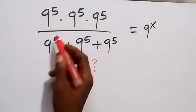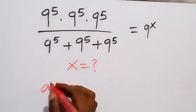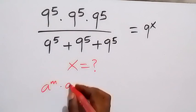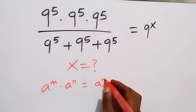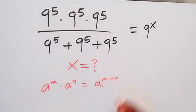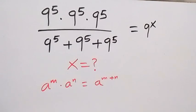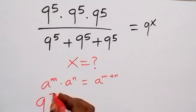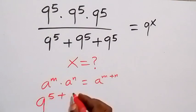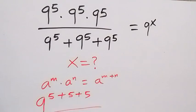Now from here we apply the law of indices: when we have a raised to power m times a raised to power n, this can be written as a raised to power m plus n. So when we apply this law here, the numerator will become 9 raised to power 5 plus 5 plus 5, then divided by the denominator.